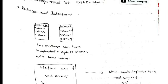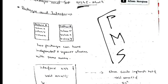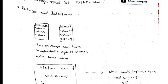Today we will be discussing the fourth module of object-oriented concepts. This module is divided into three parts: the first is about packages and interfaces, the second is about multi-threading, and the third is about synchronization. Let's discuss each one by one.